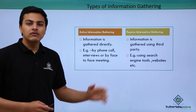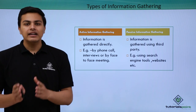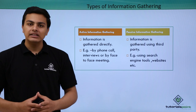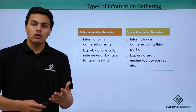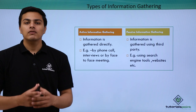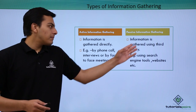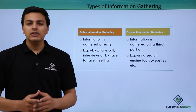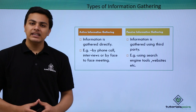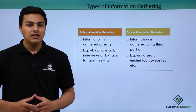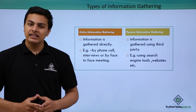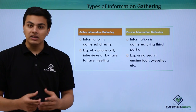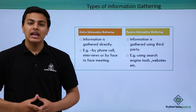In active information gathering, information is gathered directly. For example, if our target is a person, we can gather information through a phone call, a face-to-face meeting, or by taking an interview of that person. Whereas in passive information gathering, the information is gathered using a third party. Most hackers use passive techniques because the target will not be able to know that someone is searching for information about them. That's why passive information gathering is one of the best approaches.